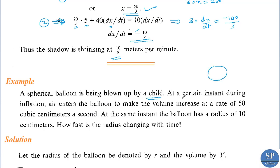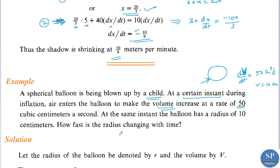Suppose we have a spherical balloon. At a certain instant during inflation, air enters the balloon making the volume increase at a rate of 50 cubic centimeters a second. At the same instant, the balloon has a radius of 10 centimeters. How fast is the radius changing with time? That is, we have to find dr by dt.